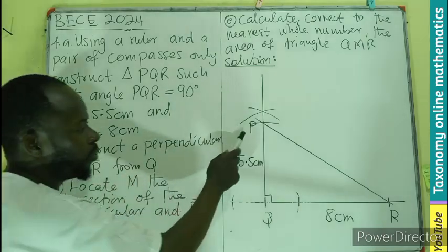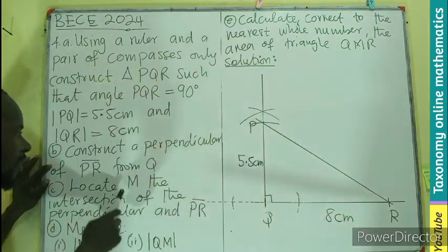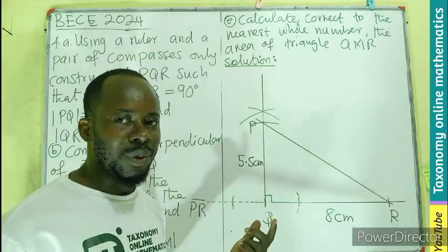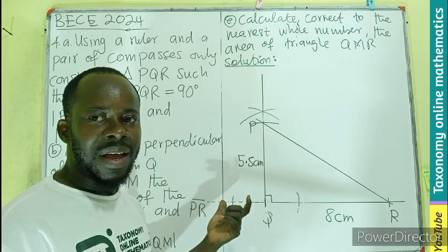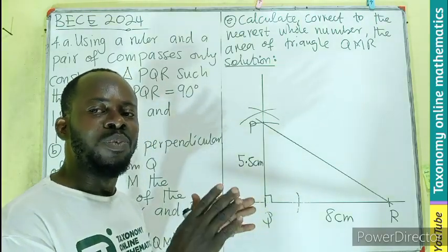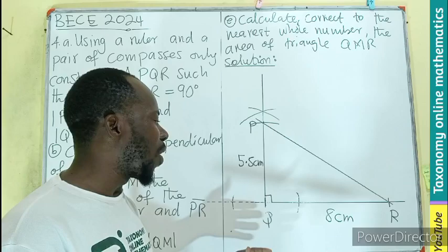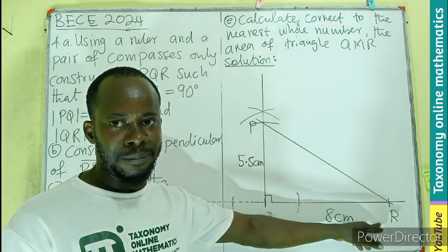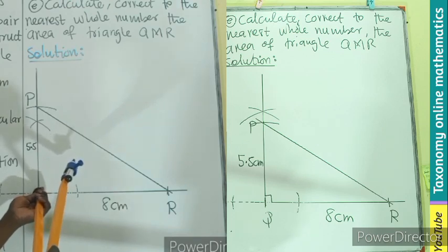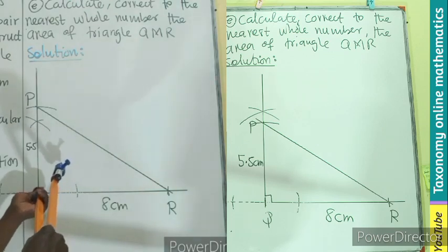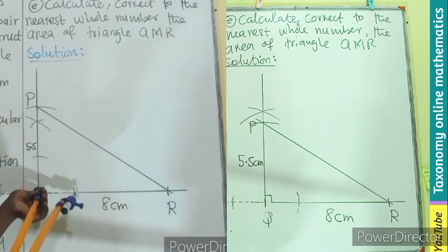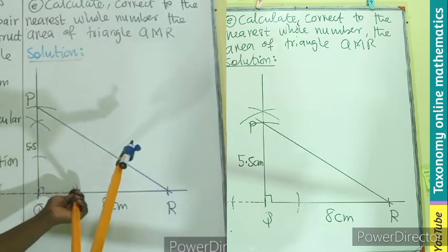Now we have to construct a perpendicular from Q to PR. In the previous episode, this is how I constructed it — which was an error, because that construction was based on the bisector of angle PQR. Standing at Q with any reasonable radius, we make arcs, then come back to those arcs.